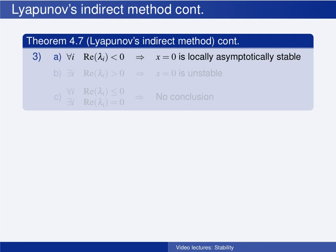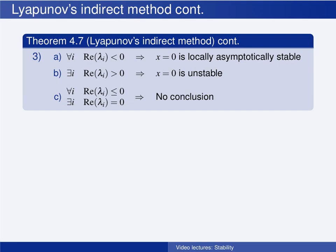If all n eigenvalues have negative real parts, then the equilibrium point is locally asymptotically stable. In the two-dimensional case, this corresponds to the equilibrium point being a stable node or a stable focus. If there exists an eigenvalue with a positive real part, then the equilibrium point is unstable. In the two-dimensional case, this corresponds to the equilibrium point being an unstable node, a saddle point, or an unstable focus.